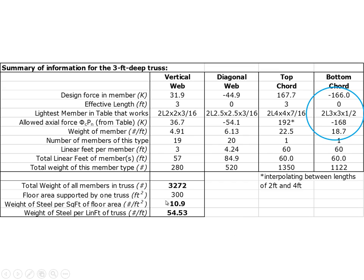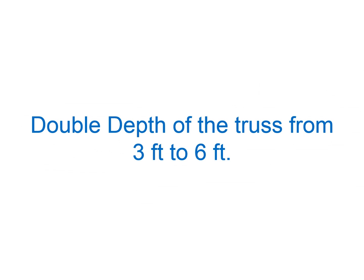The weight per foot of the three-foot-deep truss is 3,272 divided by 60 feet. Since this truss supports 300 square feet of floor, it weighs 10.9 pounds per square foot. That's the summary for this three-foot-deep truss.